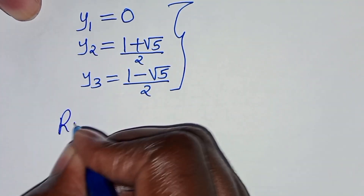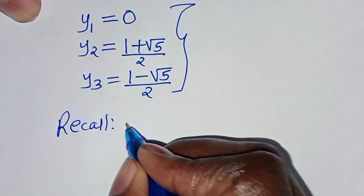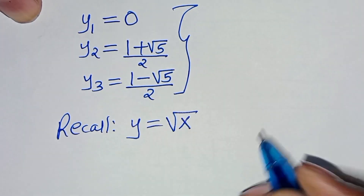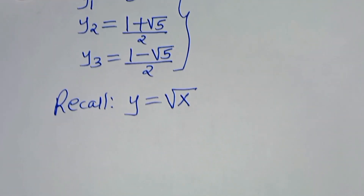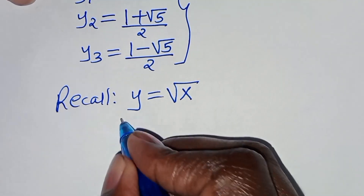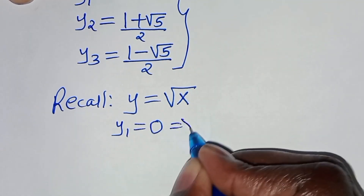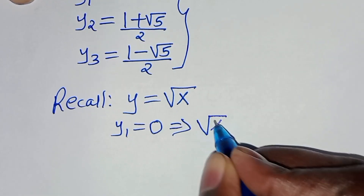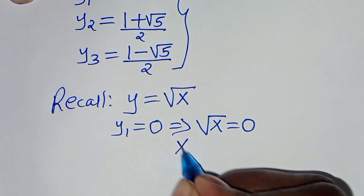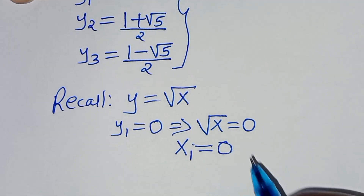Since y equals square root of x, let's solve for the values of x. Given that y₁ equals 0, this means square root of x equals 0, and therefore x₁ equals 0.